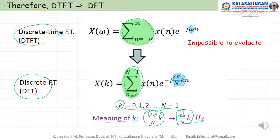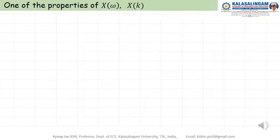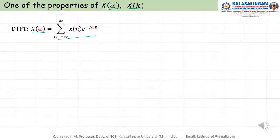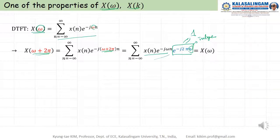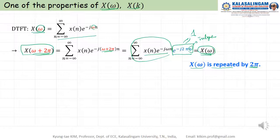The meaning of k is very important. Let me introduce one important property of X(ω) at index k. If we substitute omega with omega plus 2π, the exponent becomes minus 2πn, which is an integer, so e to the power of minus 2πn always equals 1. This means X(ω + 2π) equals X(ω) — X(ω) is repeated with period 2π. X(ω) is a periodic signal.